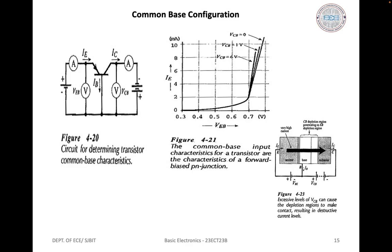Because the emitter-base junction is forward biased, the common base input characteristics are essentially those of a forward-biased PN junction. The figure also shows that for a given input voltage, more input current flows when higher levels of collector-base voltage are used. This is because larger VCB values cause the depletion region at the collector-base junction to penetrate deeper into the base, shortening the distance and reducing the resistance between the emitter-base and collector-base depletion regions.